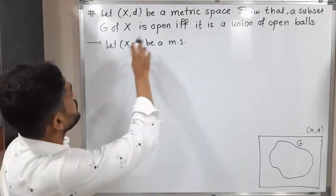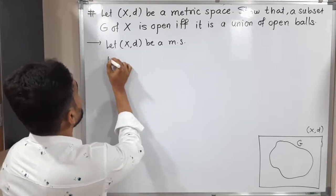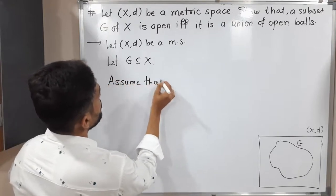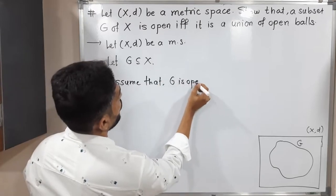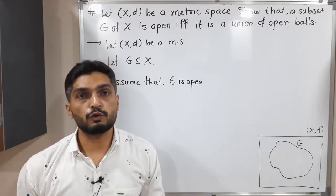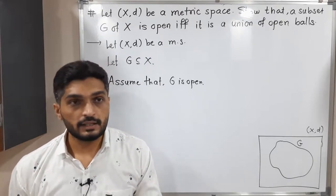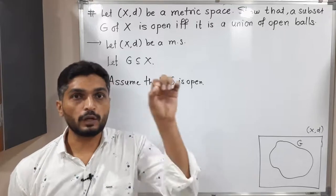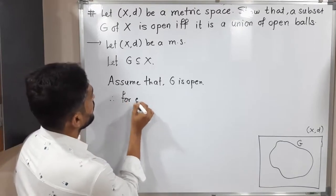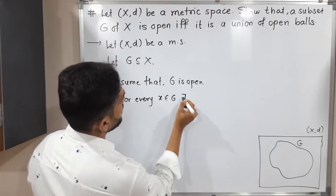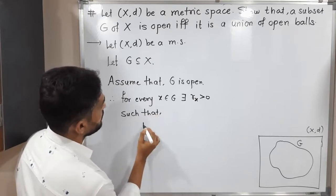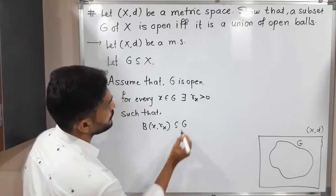Let us consider first: let G be an open subset of X. We assume first that G is open. What we have to prove? We have to prove that it is a union of open balls. Since G is open, we follow the definition of open set. The definition says: if you select any point of G, it is possible to find a ball around it which is a subset of G. So therefore, for every x belonging to G, there exists R_x greater than 0 such that B(x, R_x) ⊆ G.